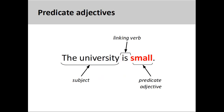Adjectives are words that describe or modify another person or thing in a sentence. In the sentence you see on the screen, 'the university is small,' the adjective 'small' describes the size of the university, which is the subject of the sentence. As the adjective comes after the linking verb 'is,' this adjective is a predicate adjective.